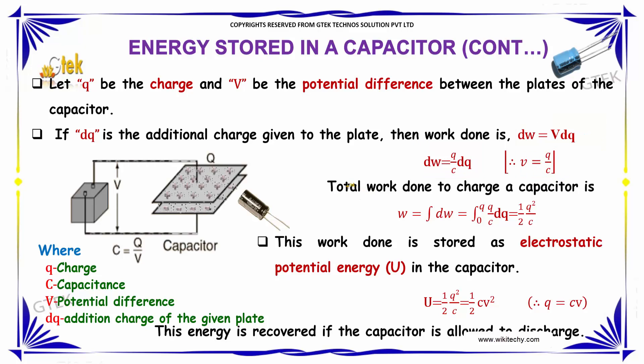Now the total work done to charge a capacitor is W equals, taking integral, it will be integral 0 to q of q by C into dq. On substituting the lower and upper limit, we'll have 1 by 2 q square divided by C.